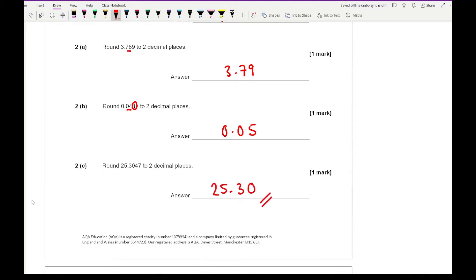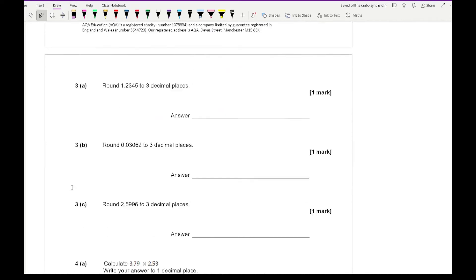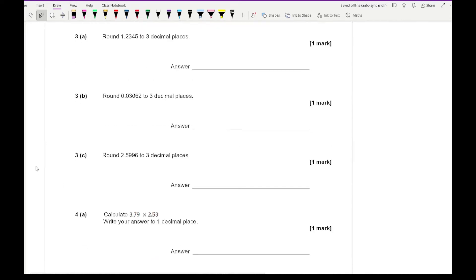A question I always get asked is if your last digit is a 0, do you have to write it? Well, if the question says 2 decimal places, it basically wants 2 digits after the decimal point, so in theory yes, you should write it. Moving on to question 3A, round 1.2345 to 3 decimal places this time. The correct answer is 1.235.